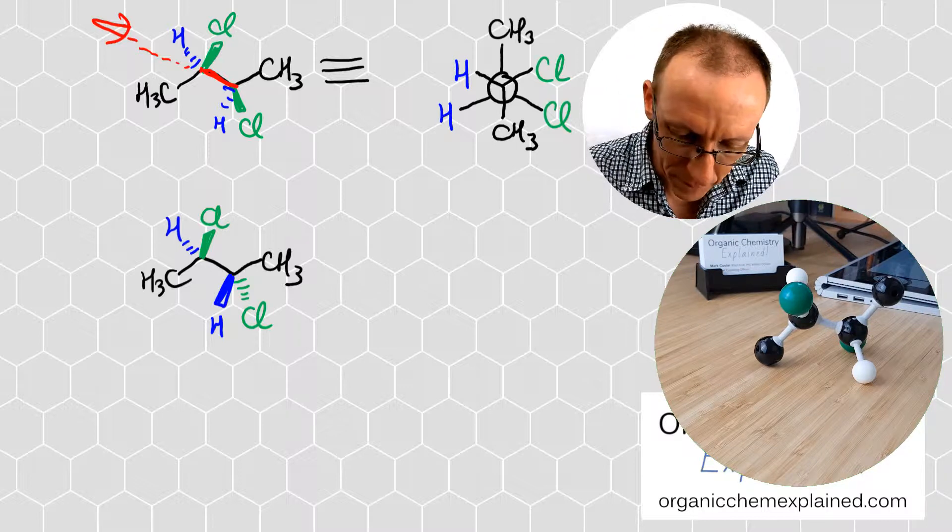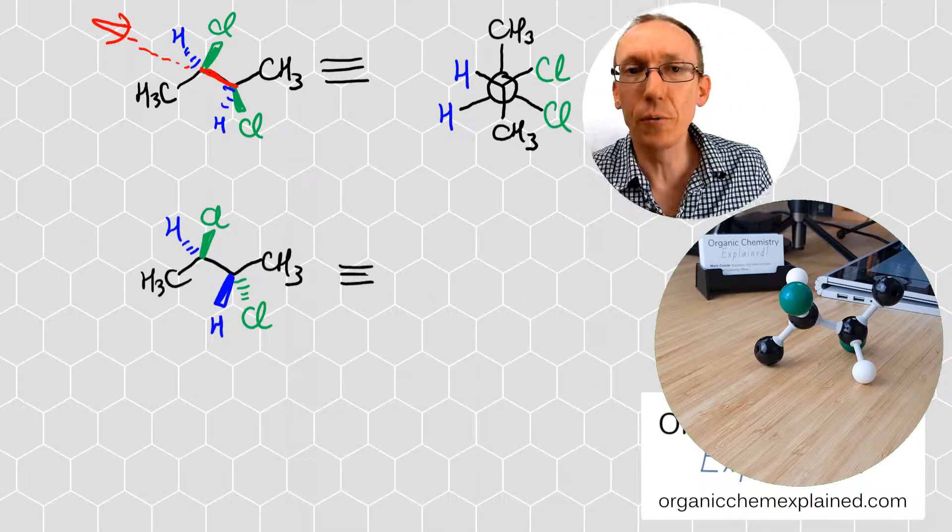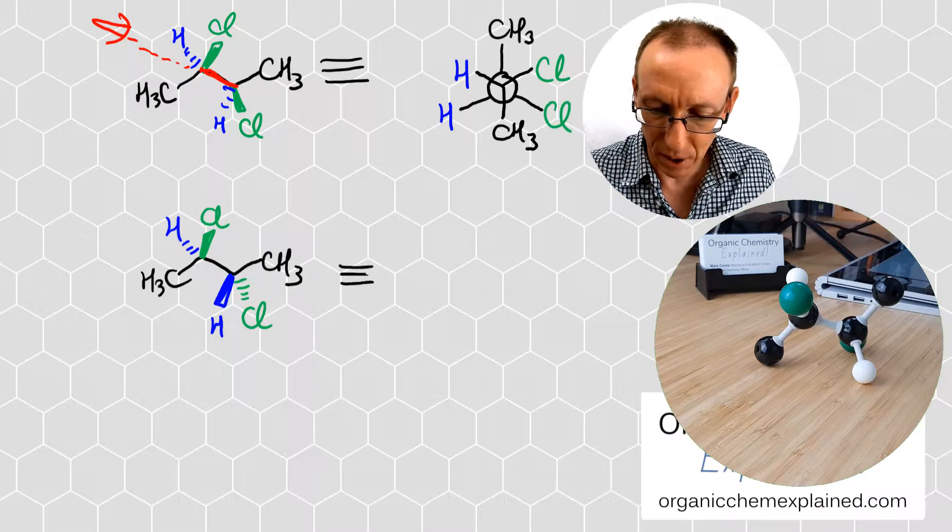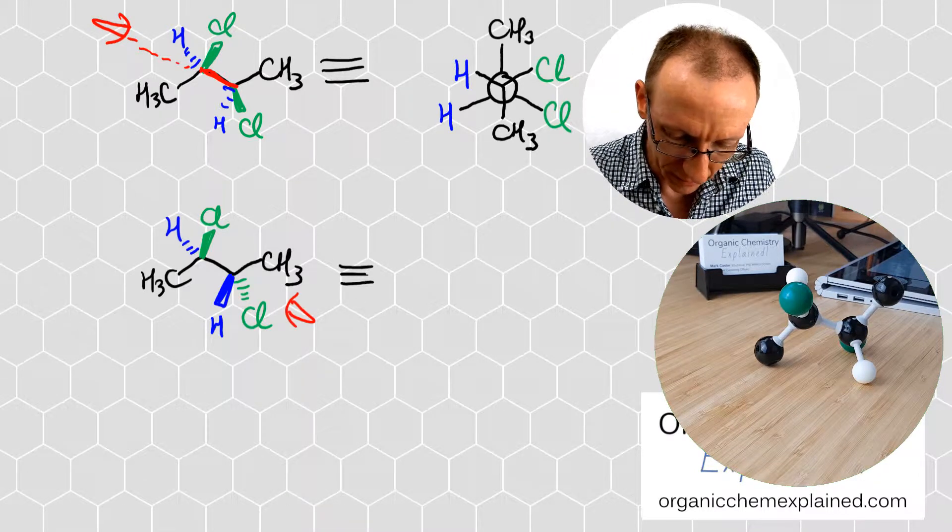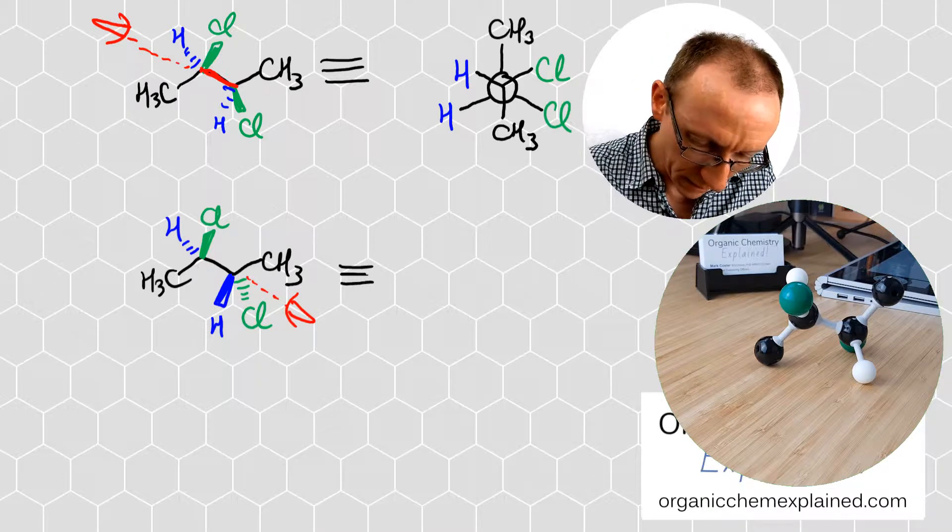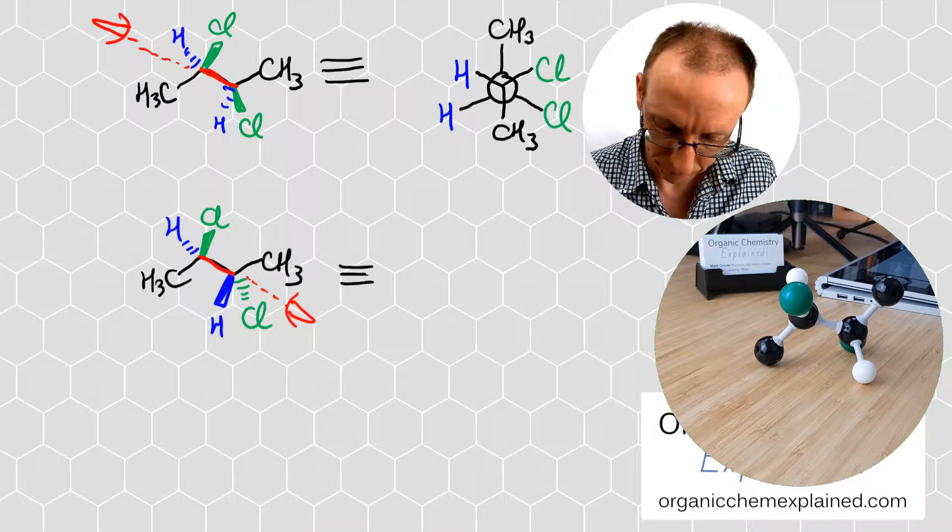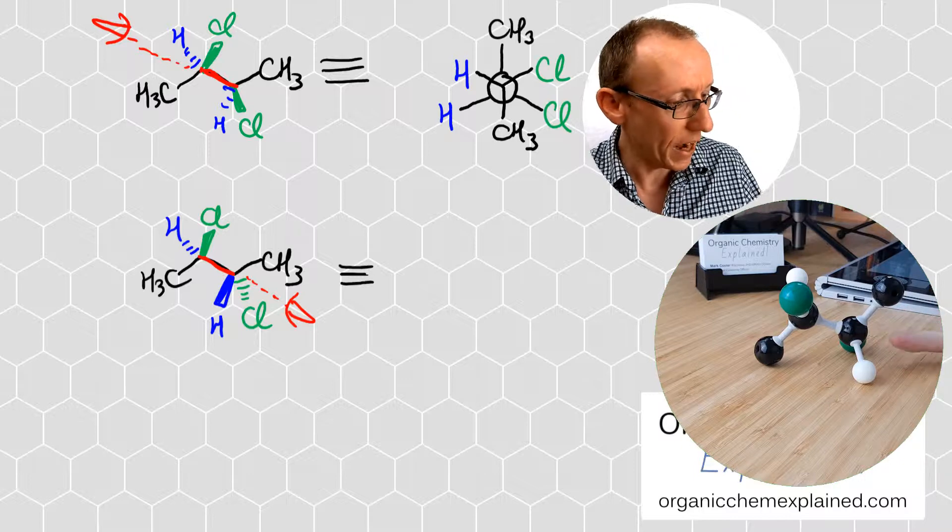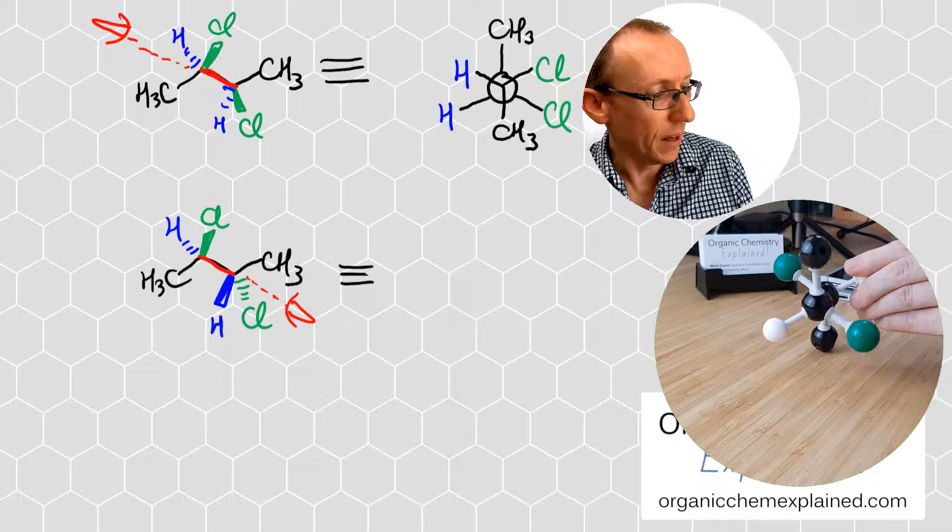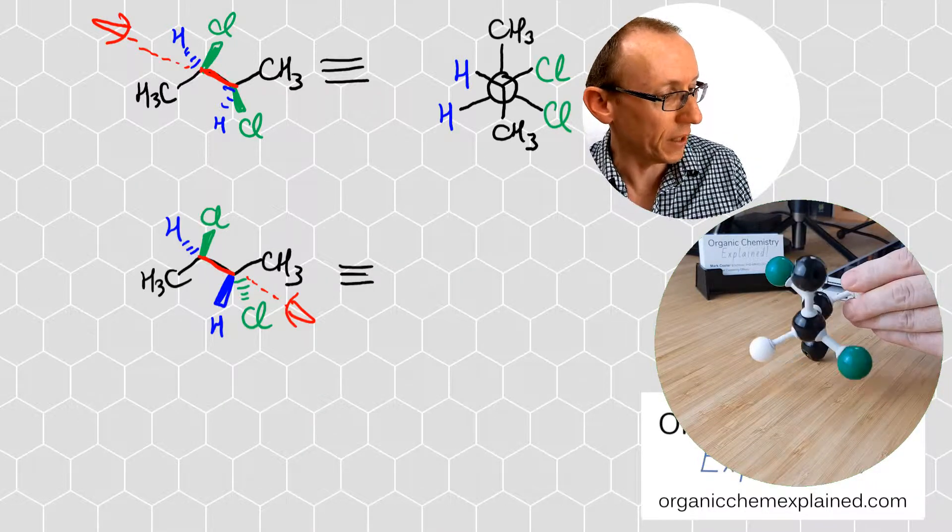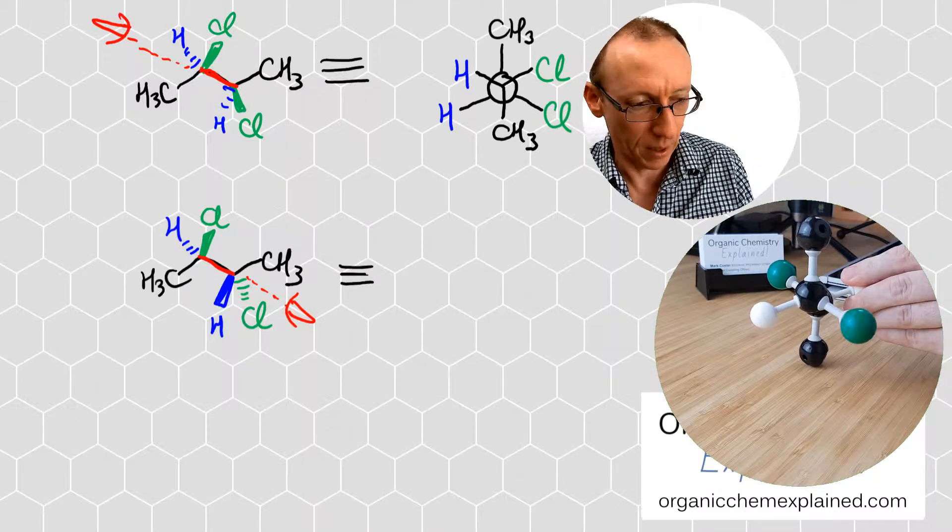Newman projection time again. What I'm going to do is do it from the opposite angle this time. I'm going to look at it from this side over here, going up this way along that bond. So now we're looking this direction. I'm going to turn the molecule like this. It's a bit harder to see now because I have to tilt it up towards the camera for you to look at it properly.